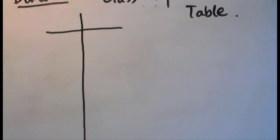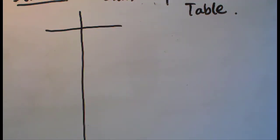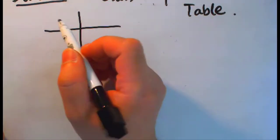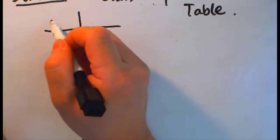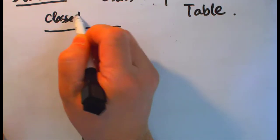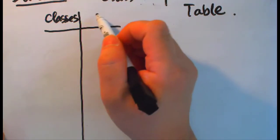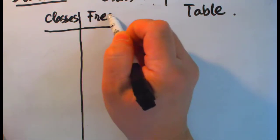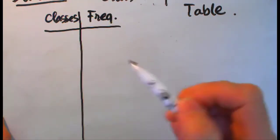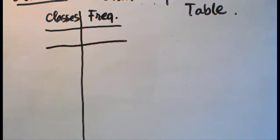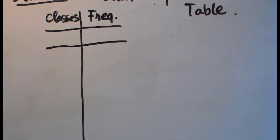Putting the table in column view or row view is pretty much your choice. On the left column of this table, I am going to put the data into classes, and on the right hand column I'm going to label the frequencies.